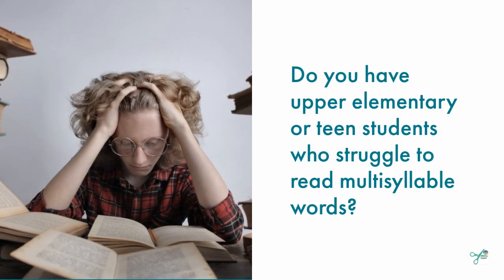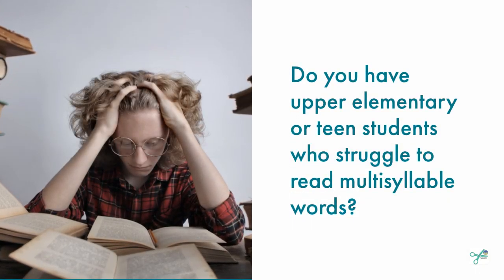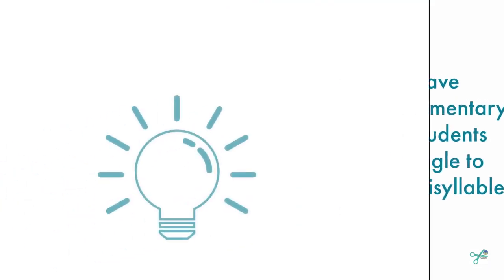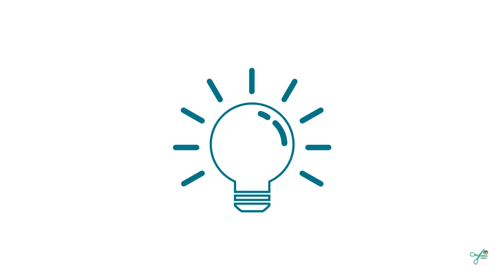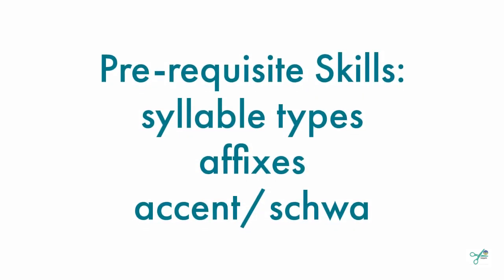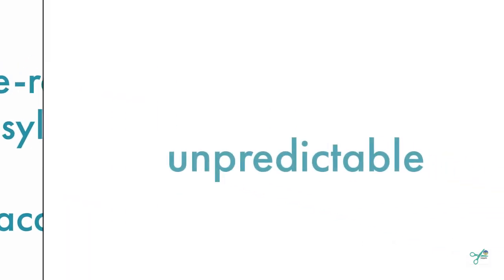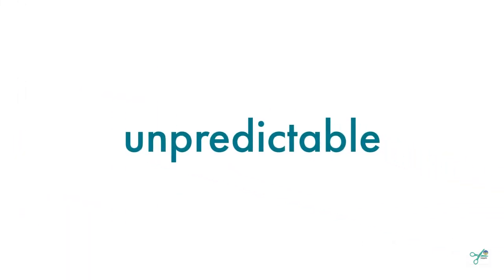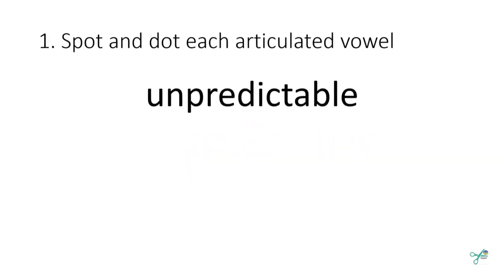Do you have big kids in your life who struggle to read multi-syllable words? Well, there's a strategy for that. This strategy works best when students have a strong knowledge of syllable types, affixes, and they understand accent and schwa. Let's start with this word: unpredictable.